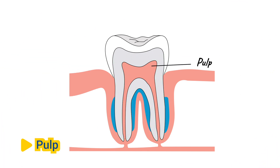Pulp. The pulp is the innermost part of the tooth and contains blood vessels, nerves, and connective tissue. It is located within a space called the pulp chamber, which extends from the crown of the tooth down to the tip of the roots. The pulp serves as the tooth's lifeline, supplying nutrients and oxygen to the surrounding tissues and transmitting sensory information to the brain.